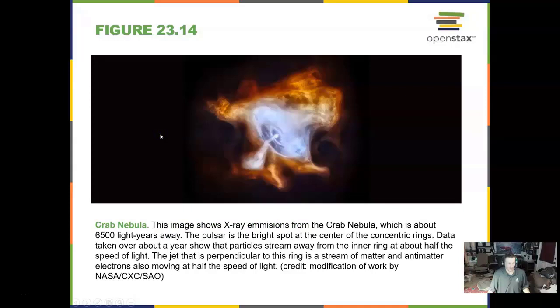The Crab Nebula is 6,500 light years away, and in the middle is actually something different. It is a neutron star about six miles across, the size of a small city.